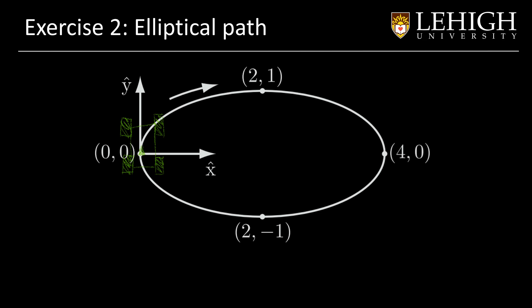In our second exercise, we will have a robot that is pointing in the y direction. And it will start rotating or moving in an elliptical path. The robot will pass through the coordinates 2, 2, 1, 4, 0 and 2, minus 1.